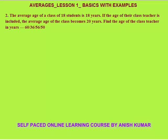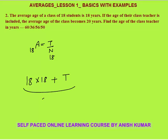Next question: the average age of a class of 18 students is 18 years. If the age of their class teacher is included, the average age of the class becomes 20 years. Find the age of the class teacher. We know total = average × N. Initially with 18 students: total age = 18 × 18. If age of teacher is T, the new total age is 18 × 18 + T.